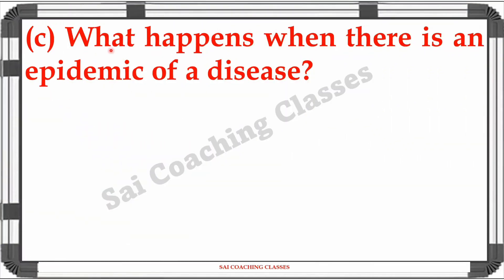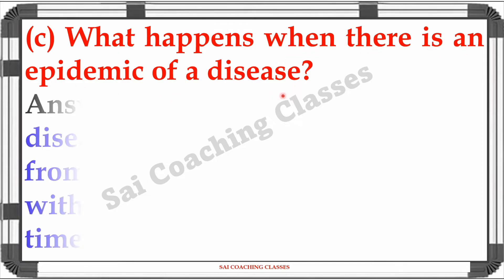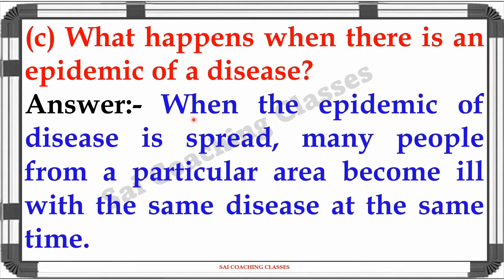Question C: What happens when there is an epidemic of disease? Answer: When an epidemic of disease spreads, many people from a particular area become ill with the same disease at the same time.